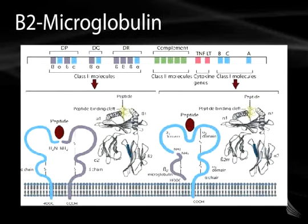This diagram demonstrates the structure of beta-2 microglobulin, with the various parts of this gene leading to the creation of various transmembrane proteins.